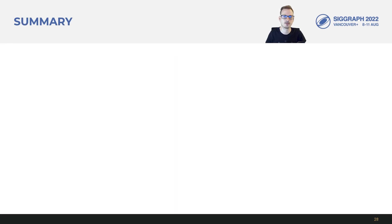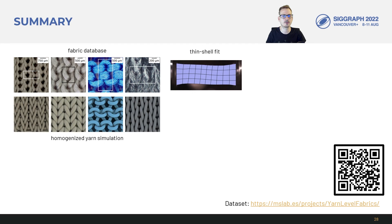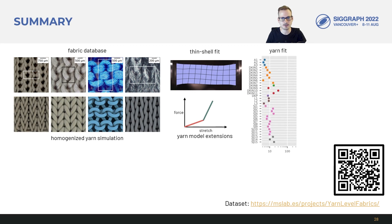To summarize we've built and published a data set of production knit fabrics with diverse physical properties. We've demonstrated a first method for fitting yarn simulations to match the fabric stretching response with some small modifications to the yarn model and we applied it to our data set. We hope that people find inspiration for future research towards a reliable connection between yarn and fabric mechanics.